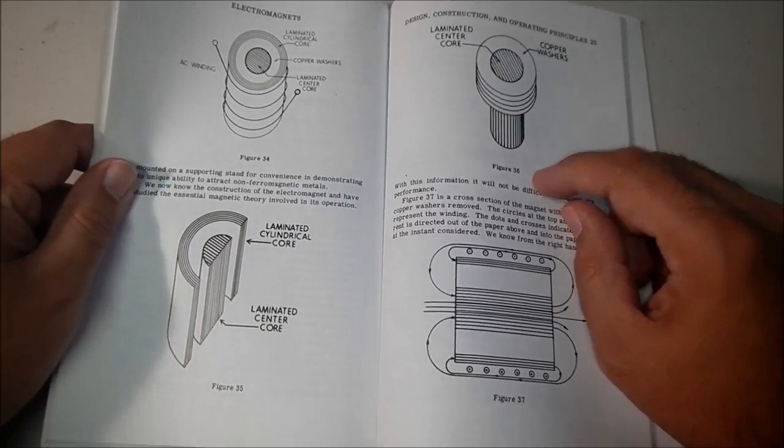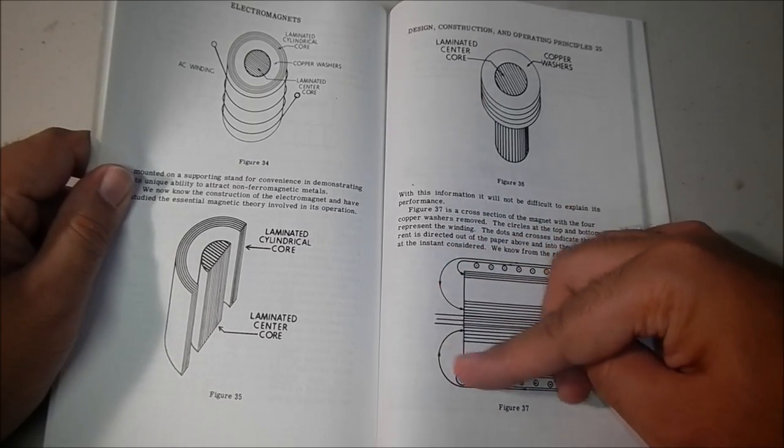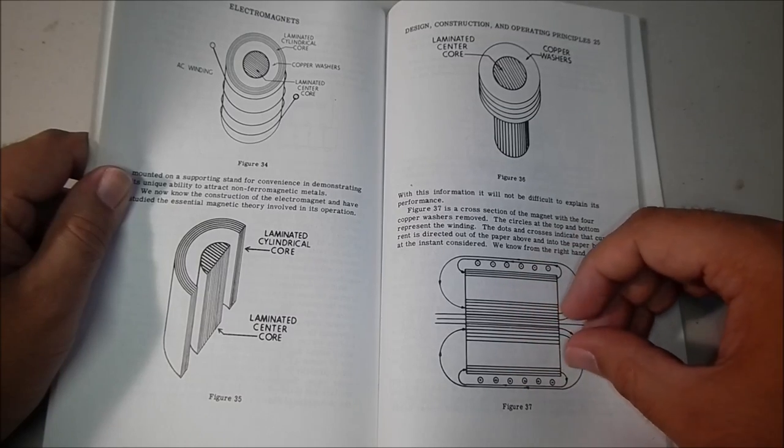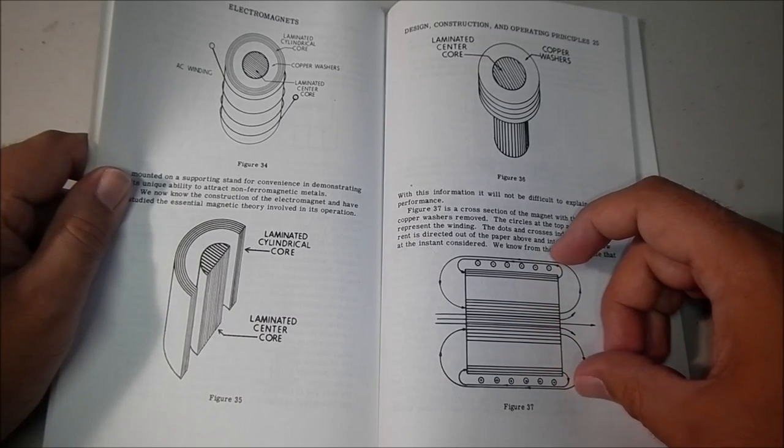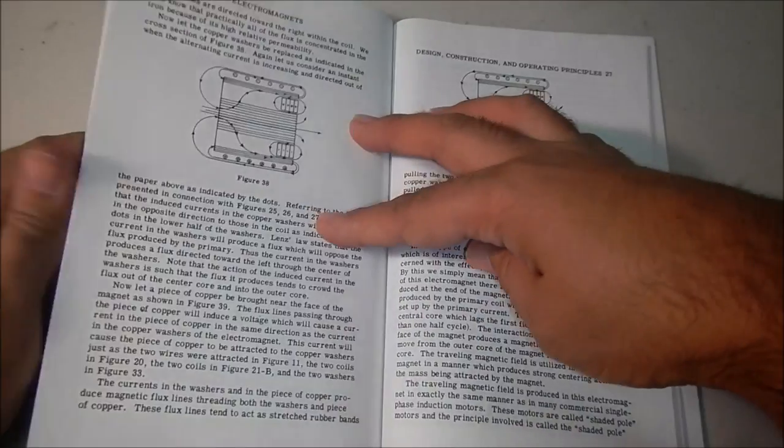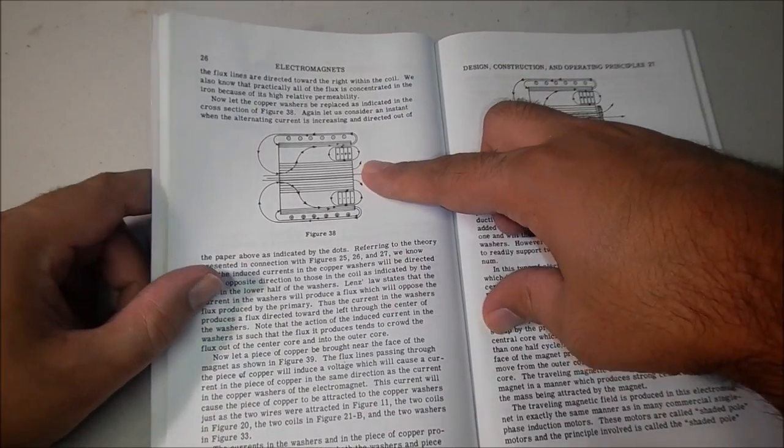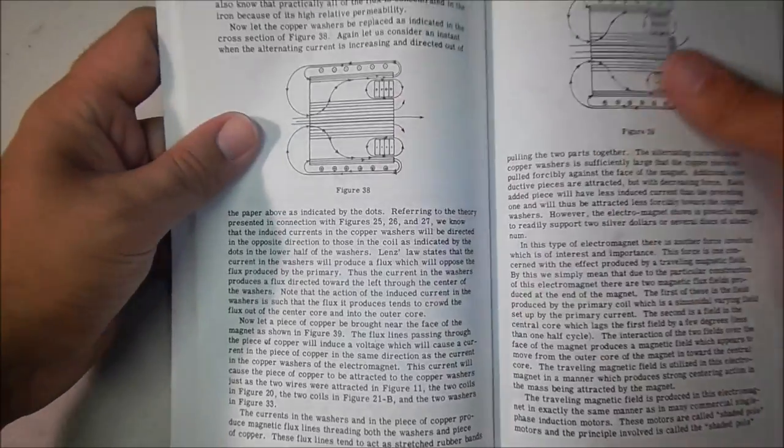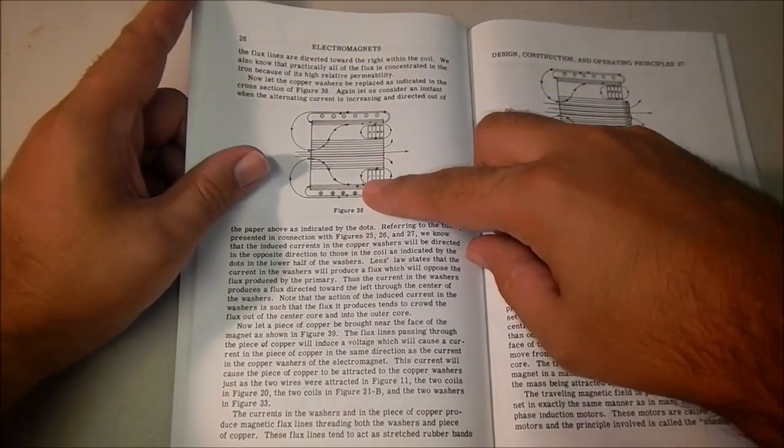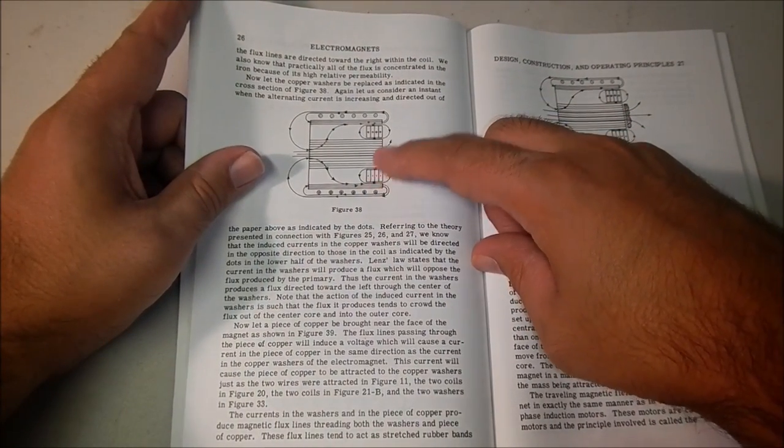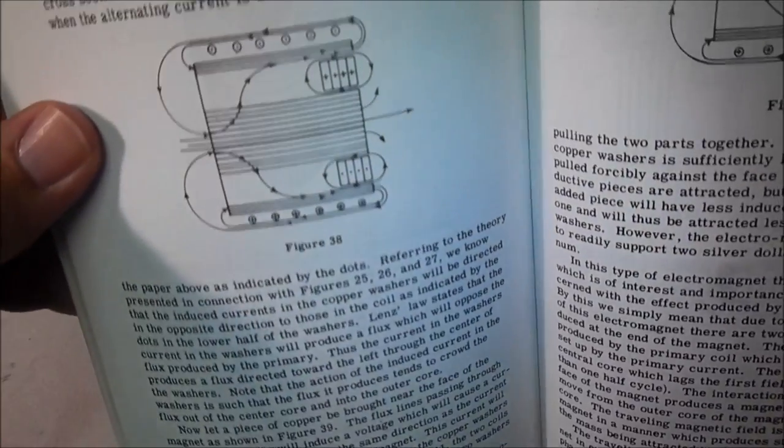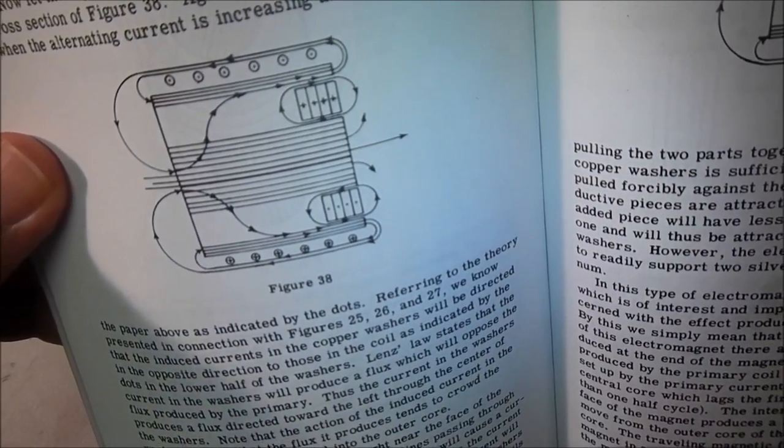What would happen is this unusual solenoid with this outer and inner core would become magnetized with an AC electromagnetic field. It would induce currents in the copper washers, as illustrated here. So these copper washers would have induced eddy currents circulating in the copper washer. Each washer would act as a turn of an electromagnetic coil.